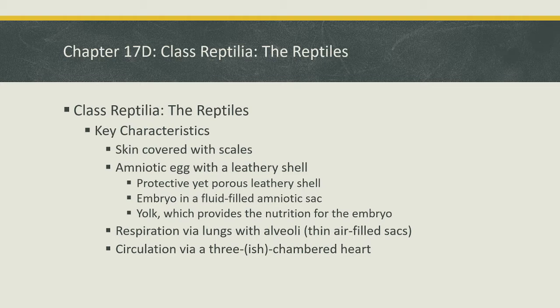The other part of the egg is the yolk, which provides nutrition for the embryo. There are some distinct similarities to humans — there's amniotic fluid in humans developing inside the womb as well. And then some similarities to bird's eggs, because you're used to thinking of the yolk of an egg, which is also part of bird's eggs.